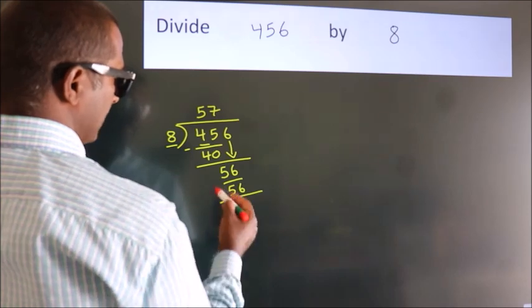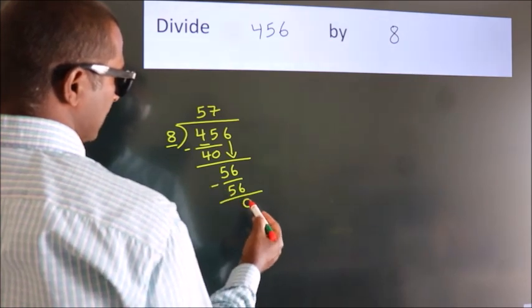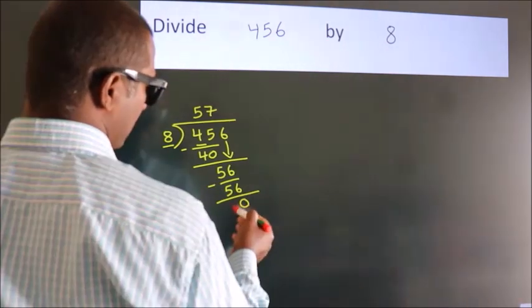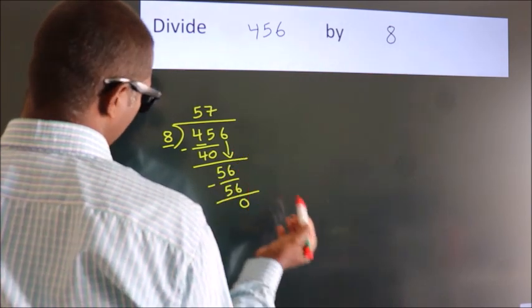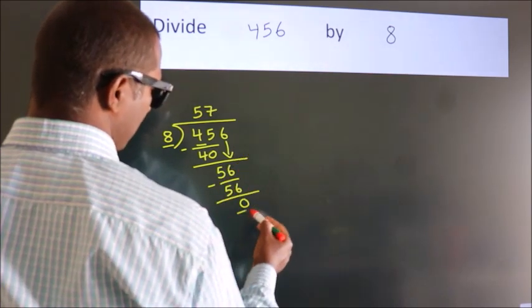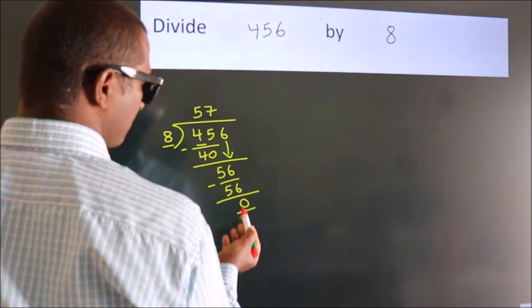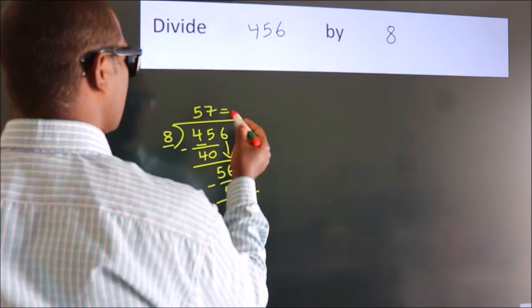Now, we subtract, we get 0. After this, no more numbers to bring down. And we got remainder 0. So, this is our quotient.